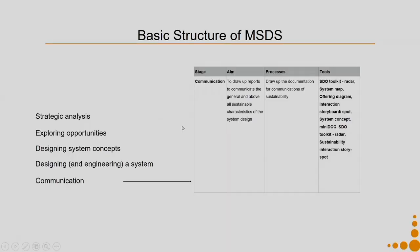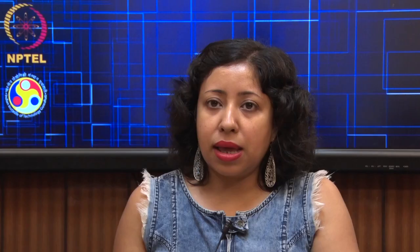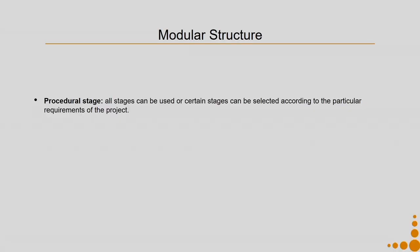Say you have all the funding, you have done a great job, and you want to tell the world that they can replicate your work — then communication has to be modified accordingly. These are the basic structural elements of the MSDS methodology. This is a very modular structure — you are given the freedom to make changes, to take certain aspects or not, because they all depend on your context, the amount of resources, time, money, and human resources you have. The five procedural stages are: strategic analysis, exploring opportunities, designing system concepts, designing and engineering the system, and communication.